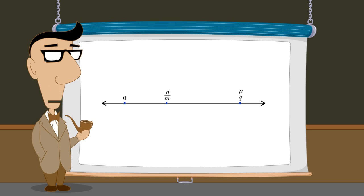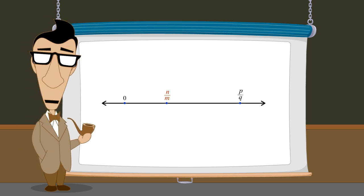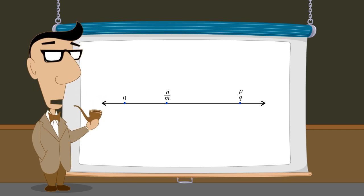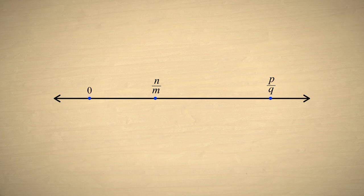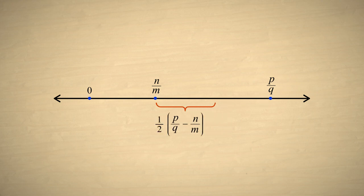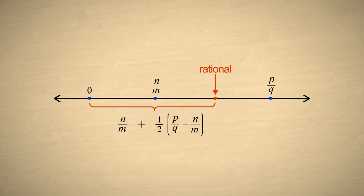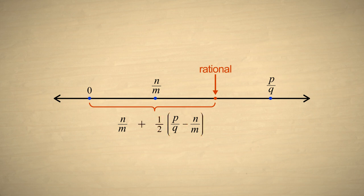To do this, let's take two arbitrary rational numbers on the number line, n over m and p over q. To make it simple, let's assume that both these numbers are positive. To get the distance between these two numbers we subtract the smaller number from the larger number. Now if we add half that distance to the smaller number, we get the distance from the origin to the point halfway between the two numbers. This point must also be a rational number since it is composed of rational numbers added, subtracted, and multiplied together. Since rational numbers are closed under all the arithmetic operations, the results of these operations must also be rational.